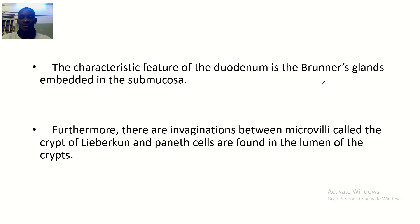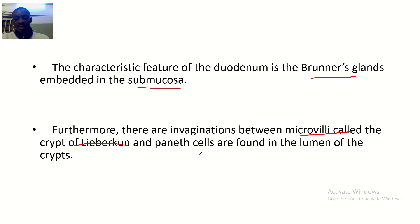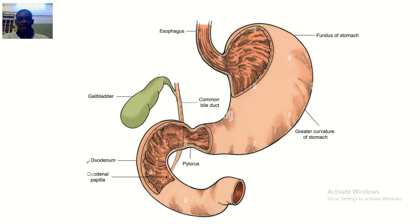The characteristic feature of the duodenum is Brunner's glands, embedded in the mucosa. There are also invaginations between the microvilli called the crypts of Lieberkühn, and Paneth cells are found in the lumen of these crypts.